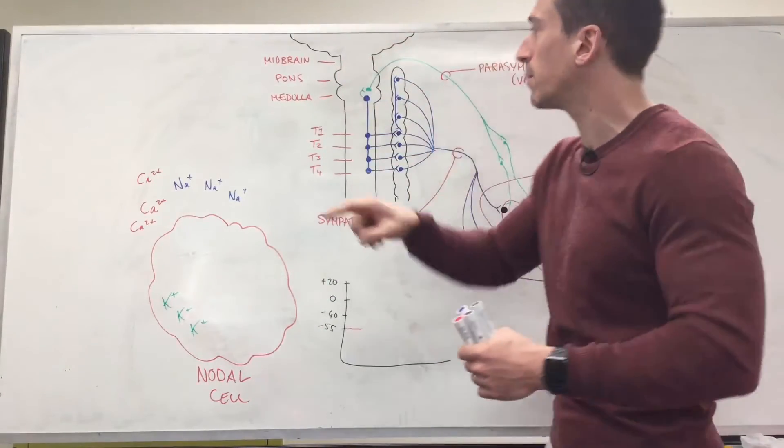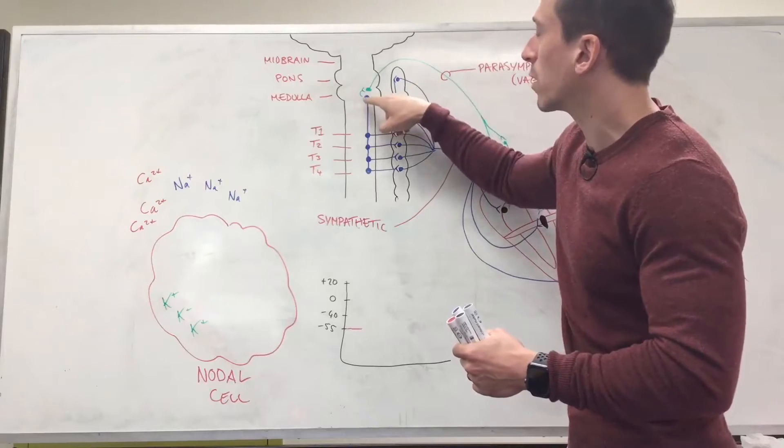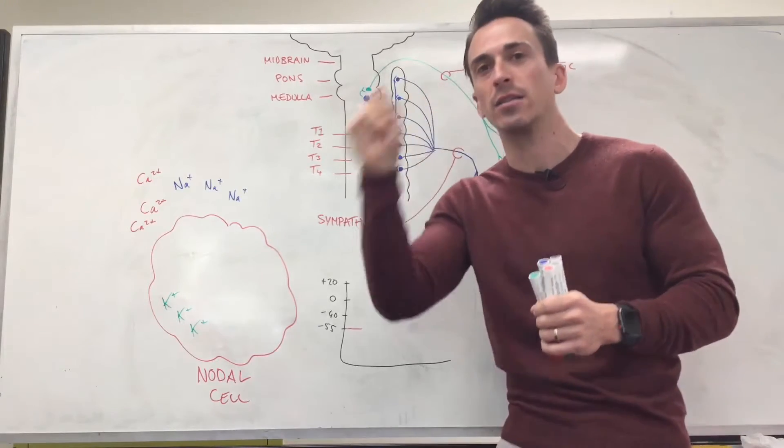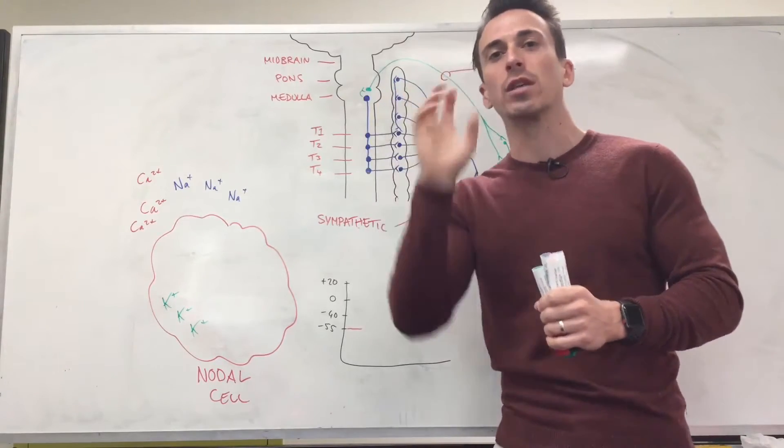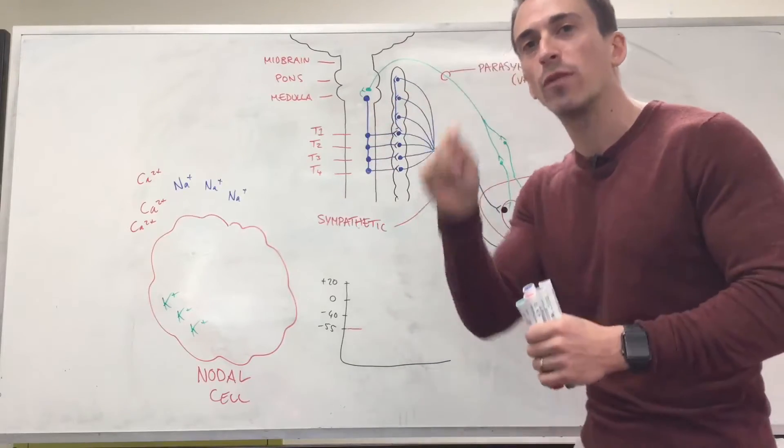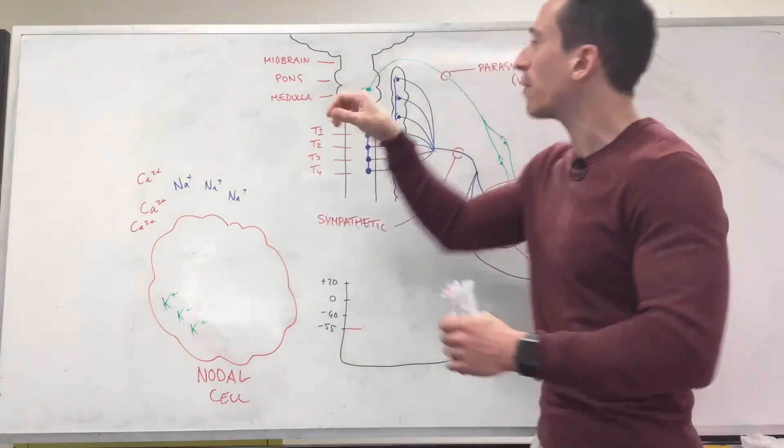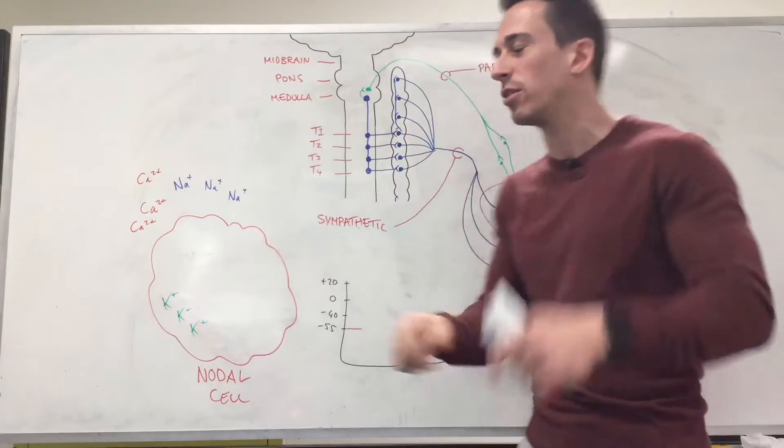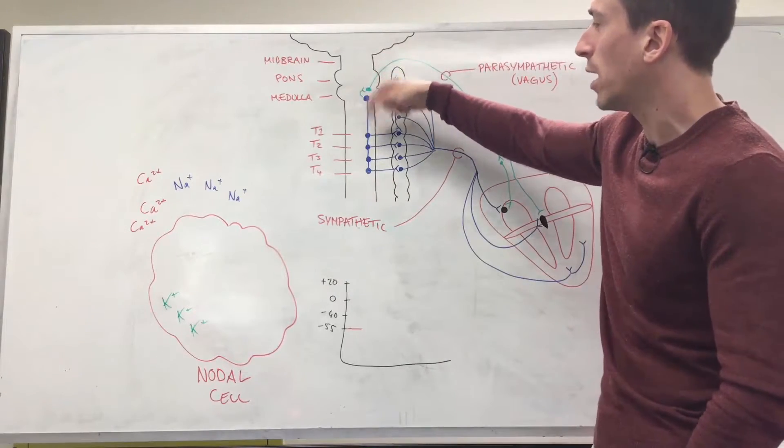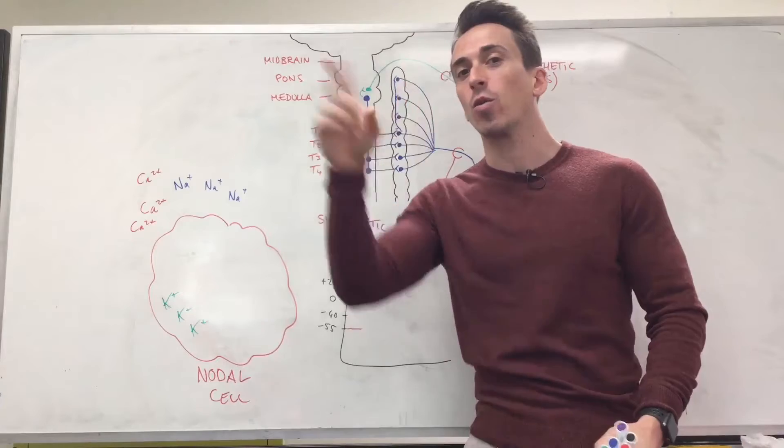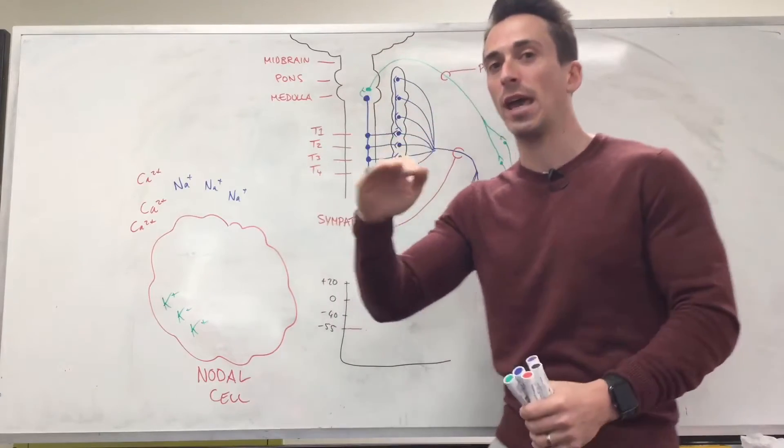The lowest part of the brainstem is the medulla, and at the medulla you've got a specific area dedicated to increasing the speed of the heart called the cardio acceleratory center. We've got sympathetic nerve fibers present, and what they do is they send a signal down the spinal cord until it hits the thoracic T1, T2, T3, and T4 area.